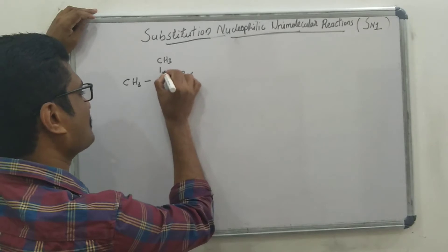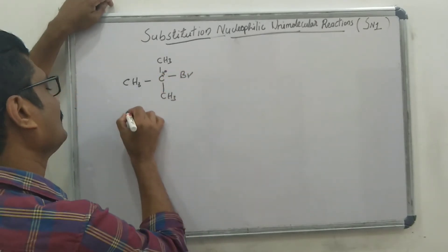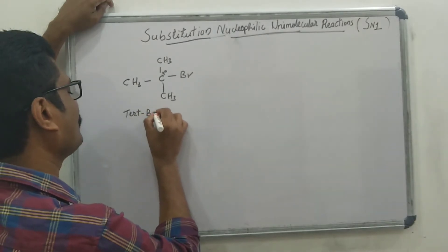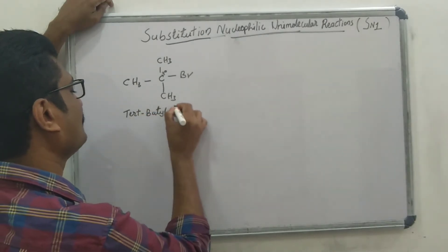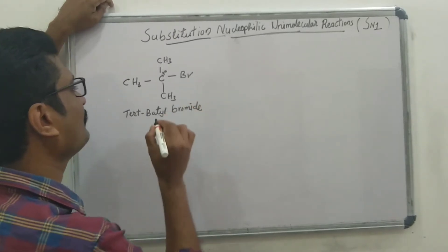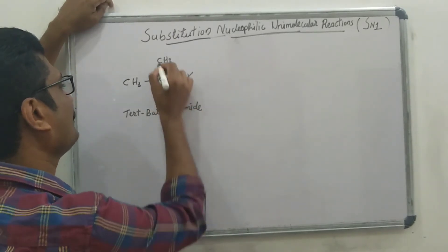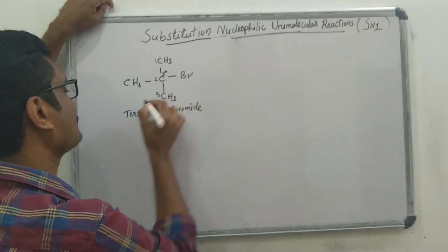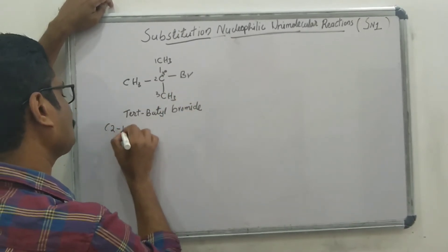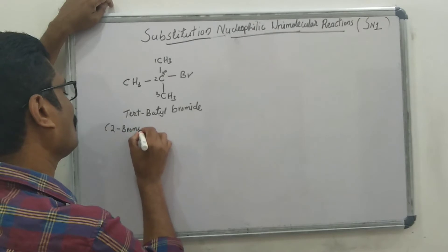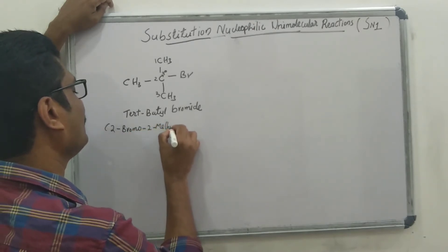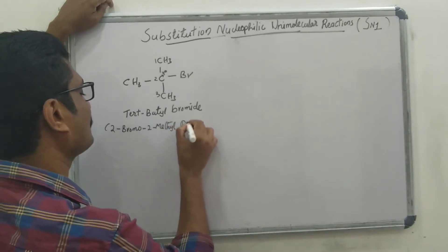This carbon atom is a tertiary carbon. The compound is called tertiary butyl bromide. Tertiary butyl bromide is its common name and its IUPAC name is 2-bromo-2-methylpropane.